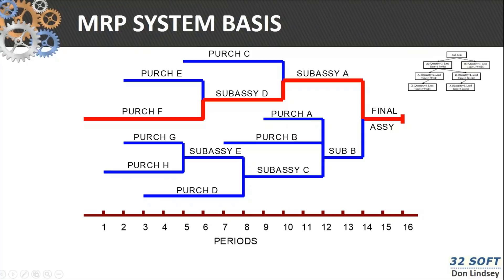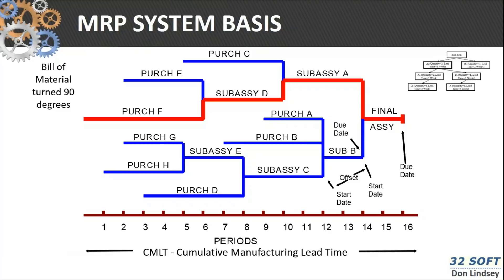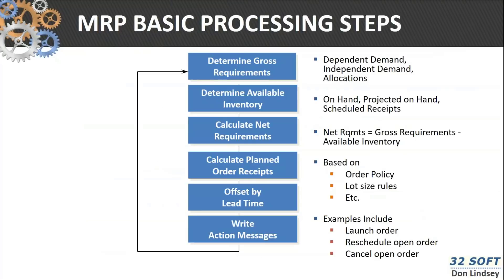The bill of material is the basis of MRP. Back in the 1960s when George and Ollie invented MRP, they figured out how to take a due date of a final assembly, take the offset of the amount of time it takes to build that particular product, and then use that in the MRP explosion. If you look at the total amount of lead time, that's called cumulative manufacturing lead time. If you're responsible for forecasting, you need to forecast at least that cumulative manufacturing lead time.